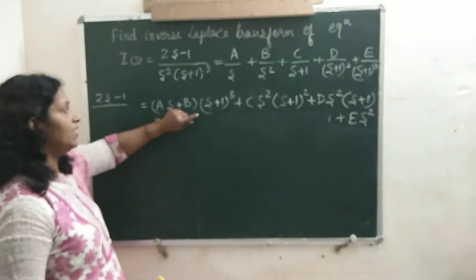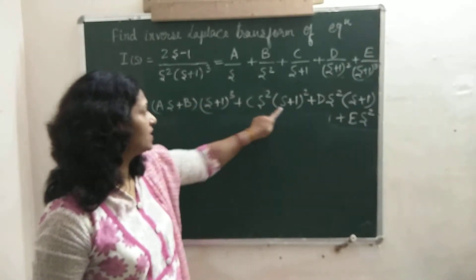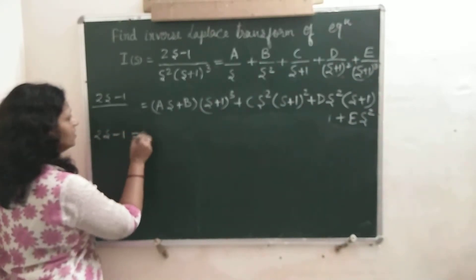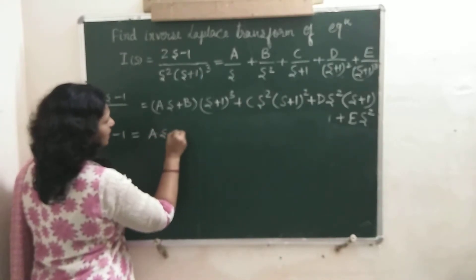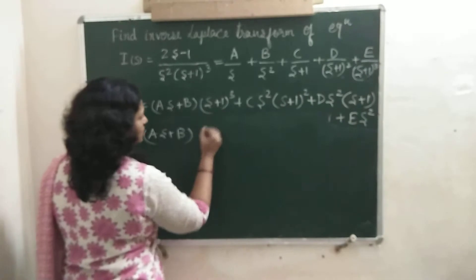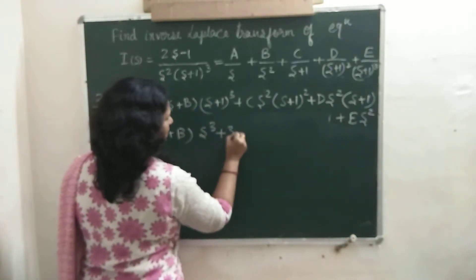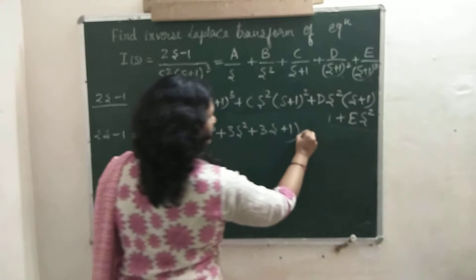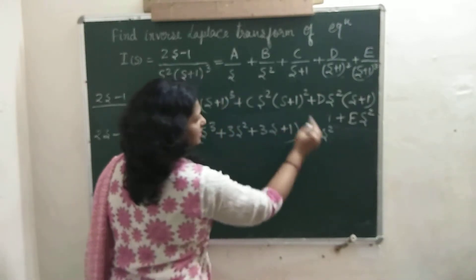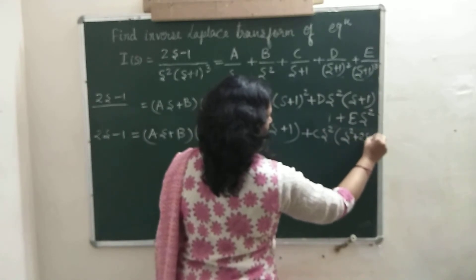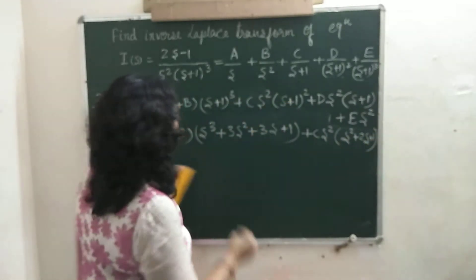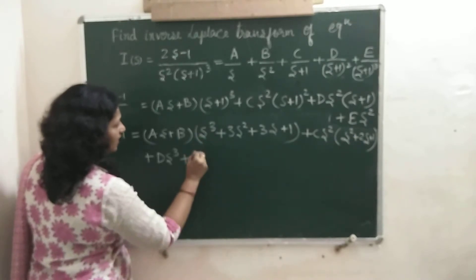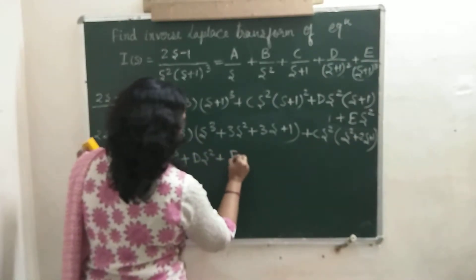Now we will simplify by expanding these terms and then compare the coefficients of S. On the left hand side: 2S minus 1. On the right hand side, expanding (AS plus B)(S plus 1) whole cube — the expansion of (S plus 1) cube is S cubed plus 3S squared plus 3S plus 1. Then plus C times S squared times (S squared plus 2S plus 1). And D times S squared times S gives D times S cubed, plus D times S squared. Plus E times S squared.